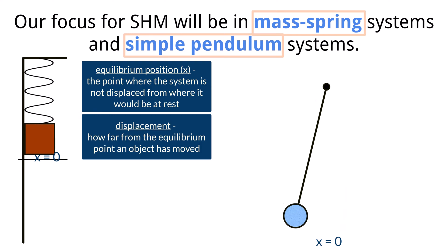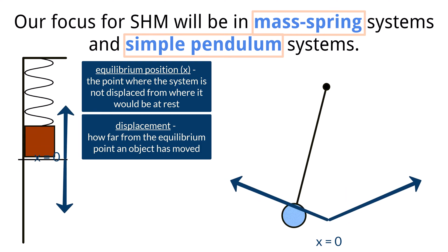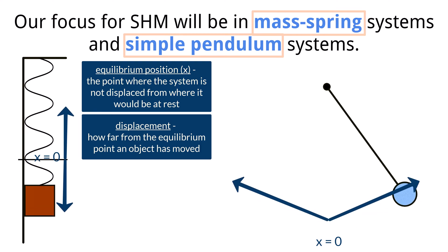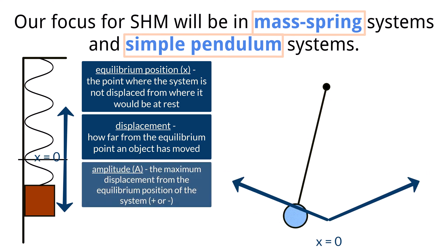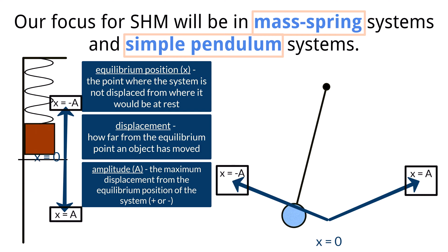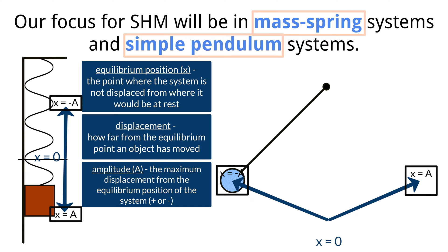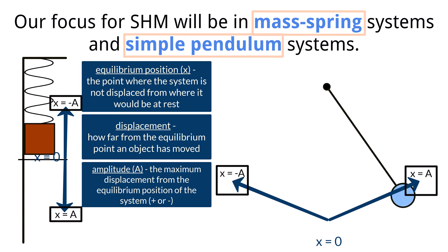The displacement - much as in kinematics, this is how far from the starting point an object has moved. Though in simple harmonic motion cases, it is how far from the equilibrium point an object has moved. The amplitude is the maximum displacement from the equilibrium position of the system, either positive or negative. This is just a very specific displacement while the previous was a more general variable.